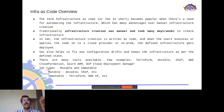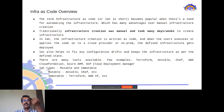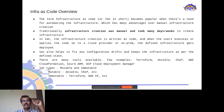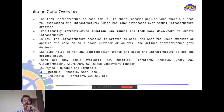Immutable infrastructure treats servers as cattle. If a configuration drift occurs, you cannot fix that specific system alone — you must redeploy the entire infrastructure. Terraform and AWS CloudFormation are examples of immutable IaC tools. Terraform is one of the most widely adopted infrastructure technologies, supporting many cloud and on-premises providers.